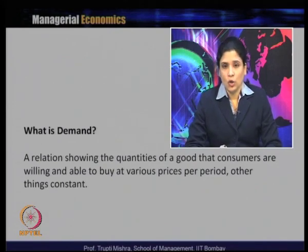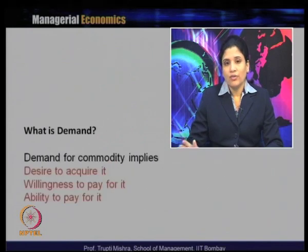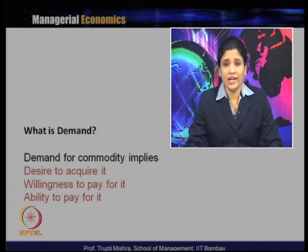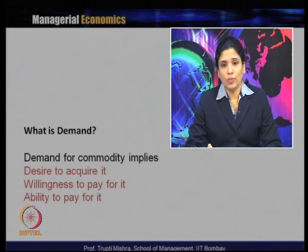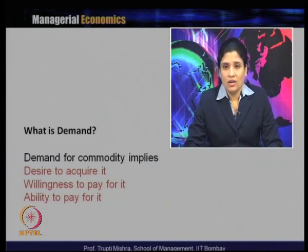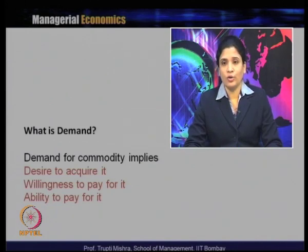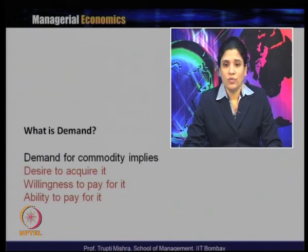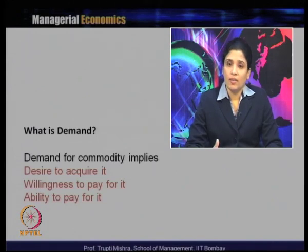Looking at the definition, there are two key points: one is willing to buy and the other is able to buy the product. A demand for a commodity depends on three preconditions. The demand takes place when the consumer has the desire to acquire it, the willingness to pay for it, and the ability to pay for it. If a consumer has no desire to acquire a product, we cannot convert that into demand — the consumer has to desire for that product, then only it can be converted into demand.